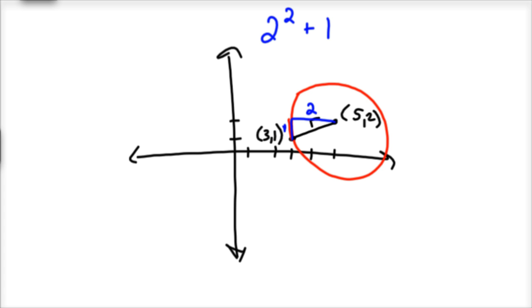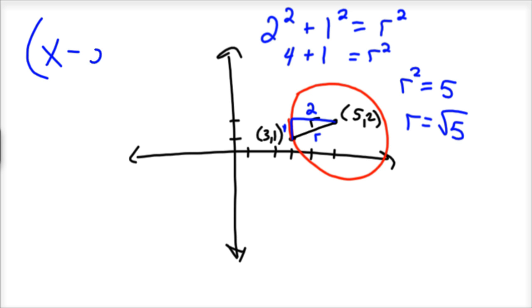So it would be 2² + 1² equals, and we'll call this r, r². And so that's 4 + 1 equals r². So r² is equal to 5. So your radius is the square root of 5. And since the center of your circle is (5,2), you would have (x-5)² + (y-2)² equals the square root of 5 squared, which is just 5.